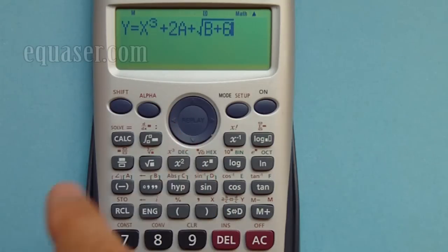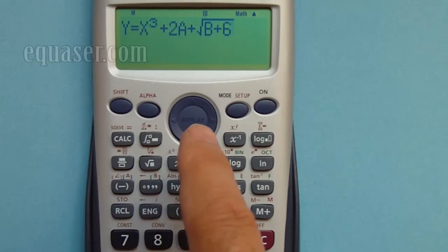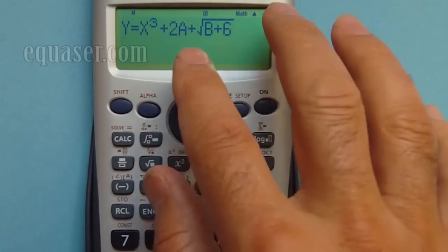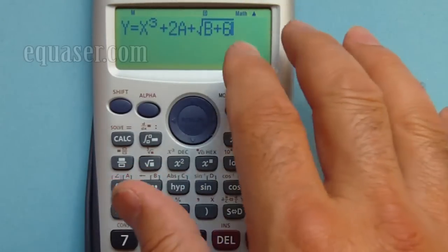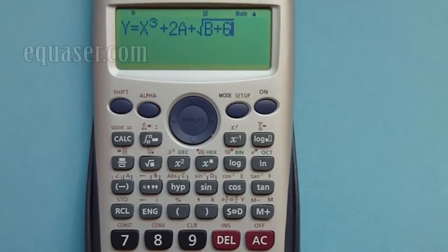These variables can be anything, but many times in our daily equations you may have Q, you may have P for power or other variables. Just replace them with A, B, or C. Write down somewhere on the paper and then you calculate.